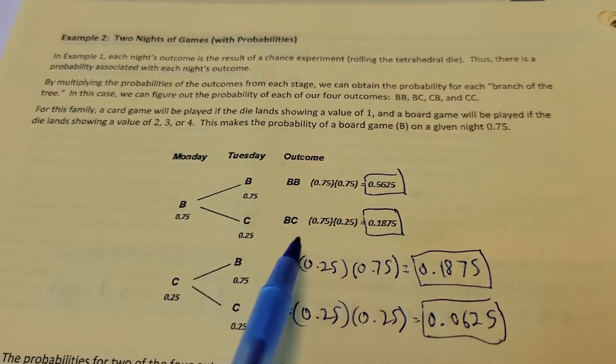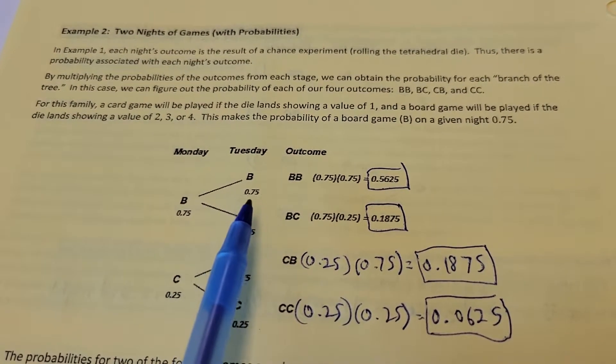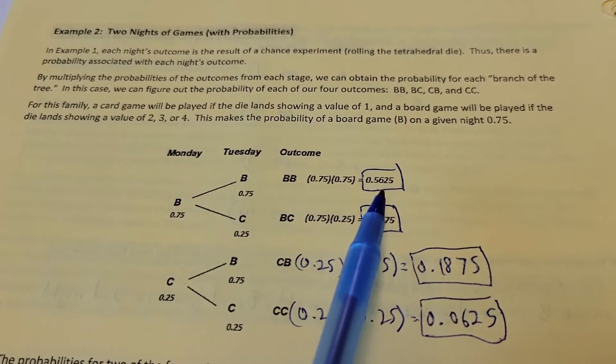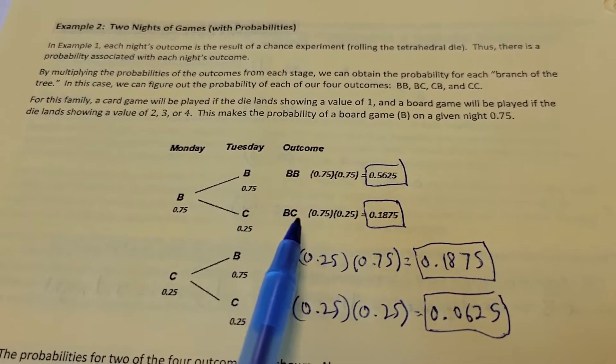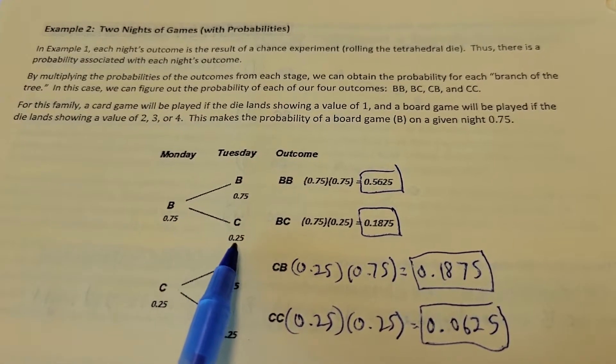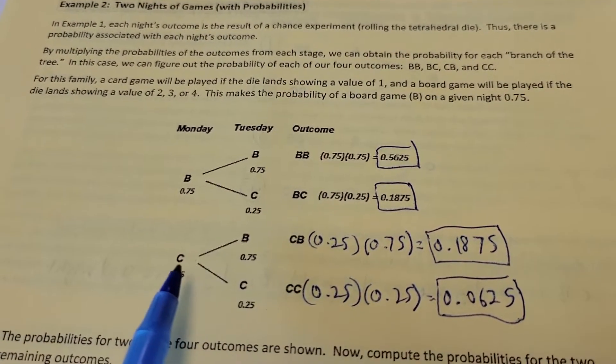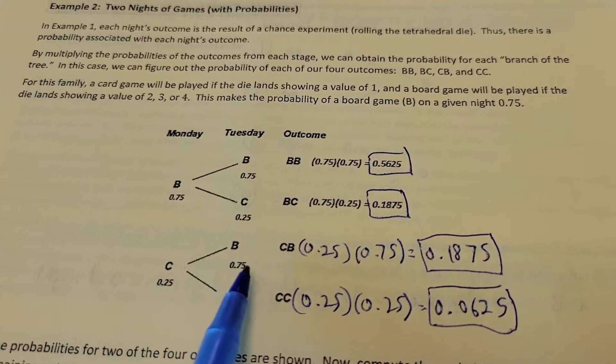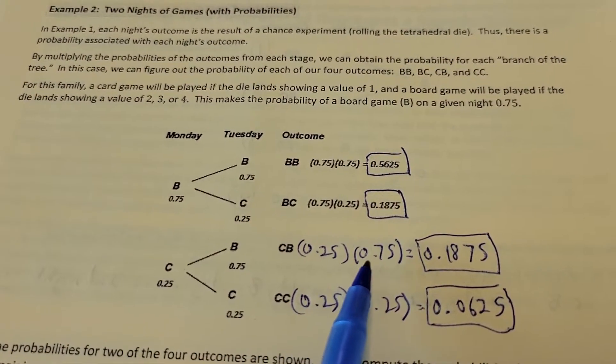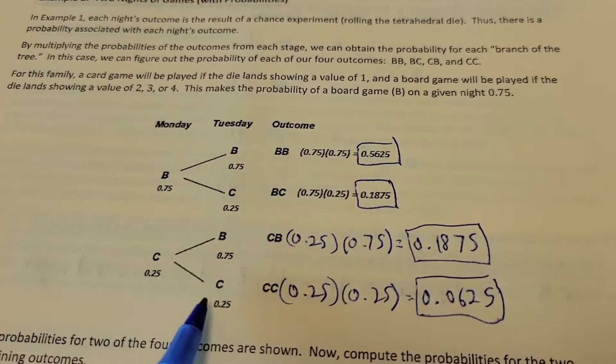What's the chances of getting board game and board game on two nights? We'll just take your probabilities and multiply them. 0.75 times 0.75, you've got 0.5625. What's the chances of getting a board game first, then a card game the next night? 0.75 times 0.25, and you get 0.1875. What's the chances of getting a card game on the first night, board game the second night? 0.25 times 0.75 gives me 0.1875.